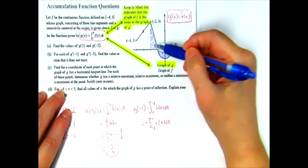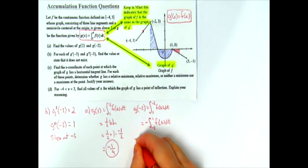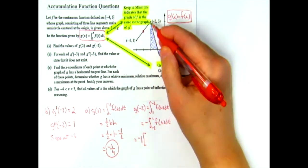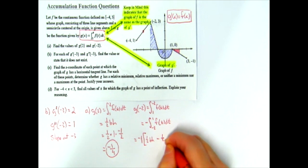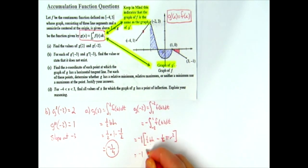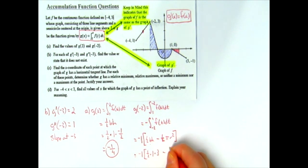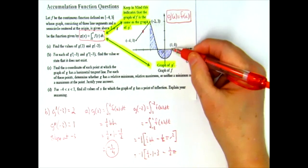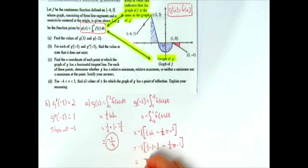The triangle is positive and the semicircle is negative, so overall I take triangle minus semicircle, then multiply by the negative out front. That gives: negative times [one-half times base times height minus one-half times pi r squared]. The base of the triangle is one, the height is three, and the radius of the semicircle is one. Distributing the negative: negative three-halves plus pi over two.